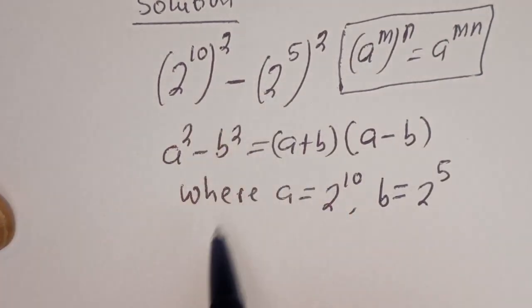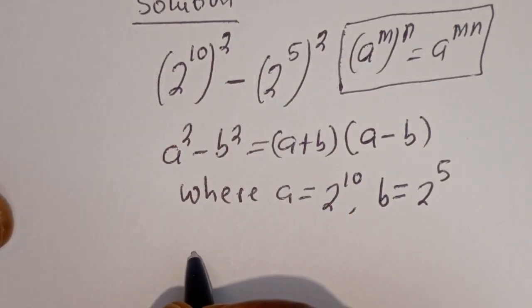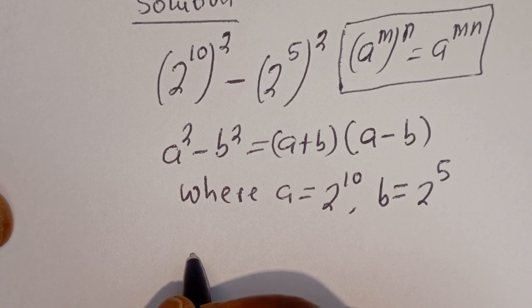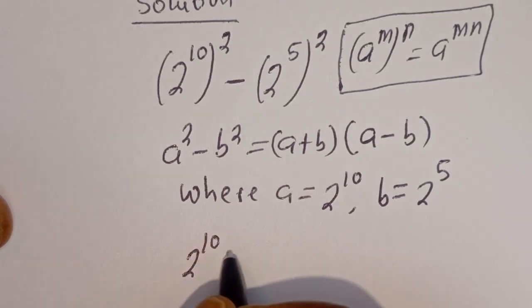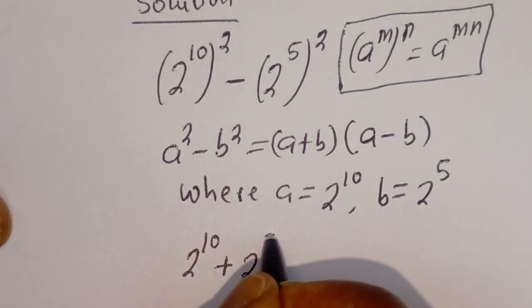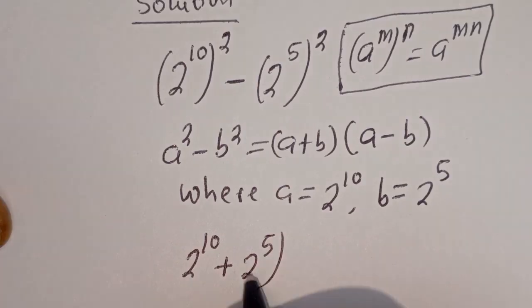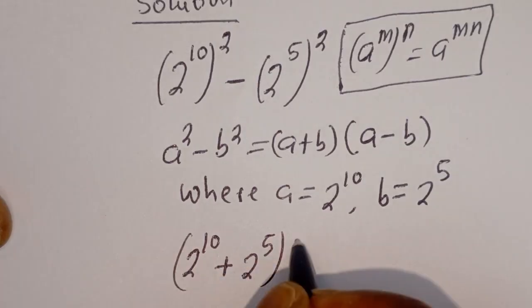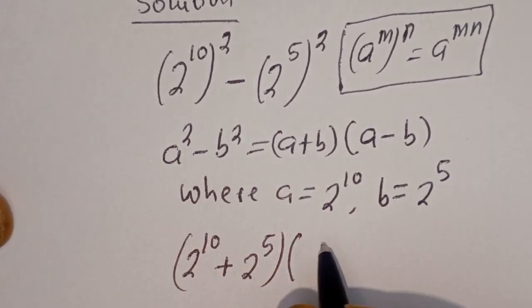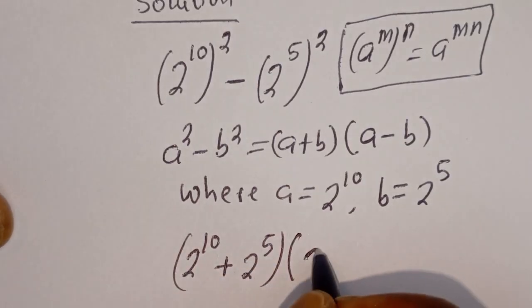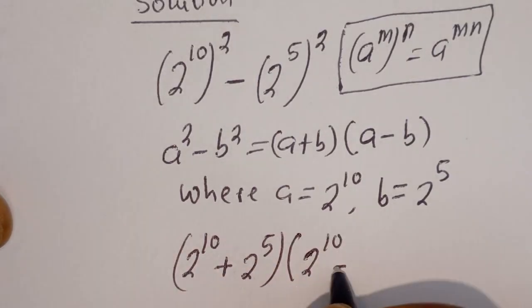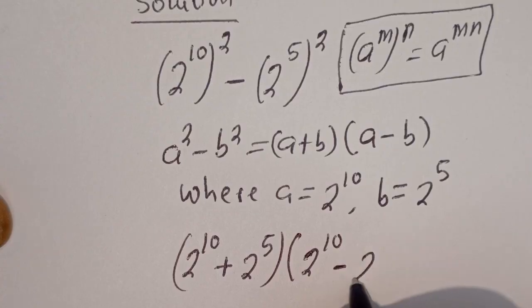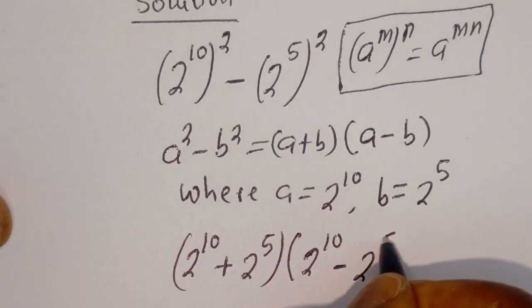Then this can be written as: 2 to the power of 10 plus 2 to the power of 5, bracket, 2 to the power of 10 minus 2 to the power of 5.